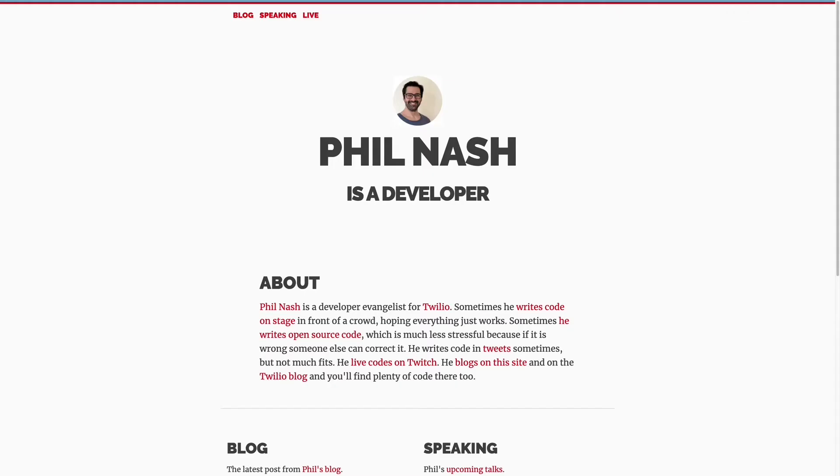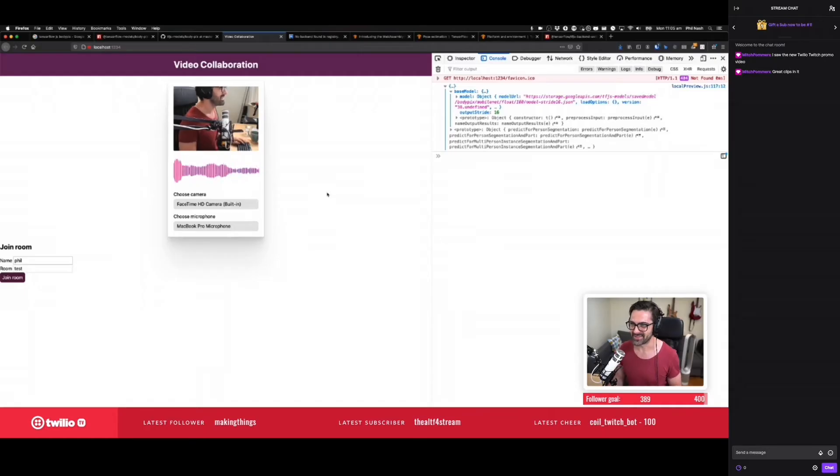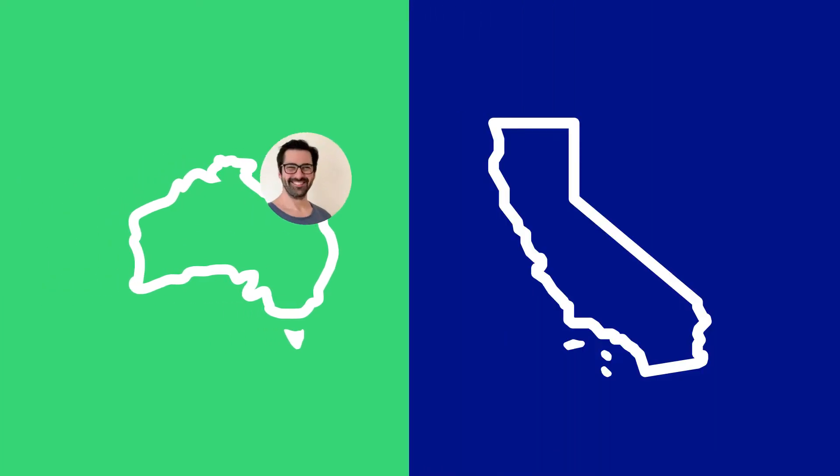Phil Nash is a Twilio dev evangelist and streamer that you might have seen on Twitch. Phil's in Australia, so usually when I'm winding down for the day, he's just getting started. We left Phil a message asking him if he could help us augment our neighborhood walks into more like neighborhood walking tours. He was challenged by Christine to build a walking tour application for the city of Portland in just a day.